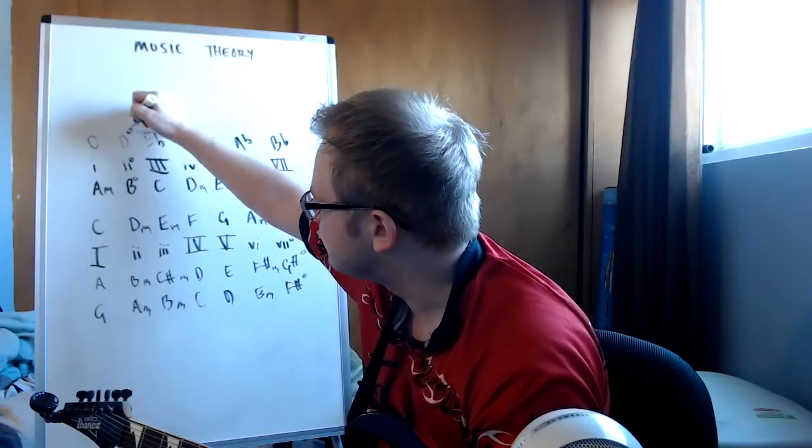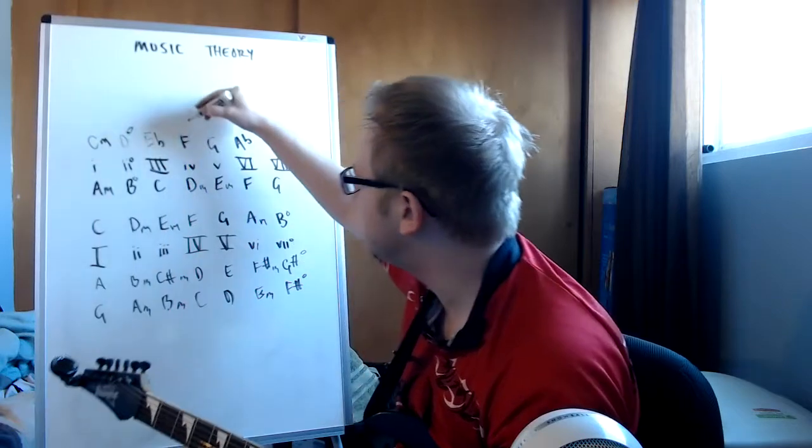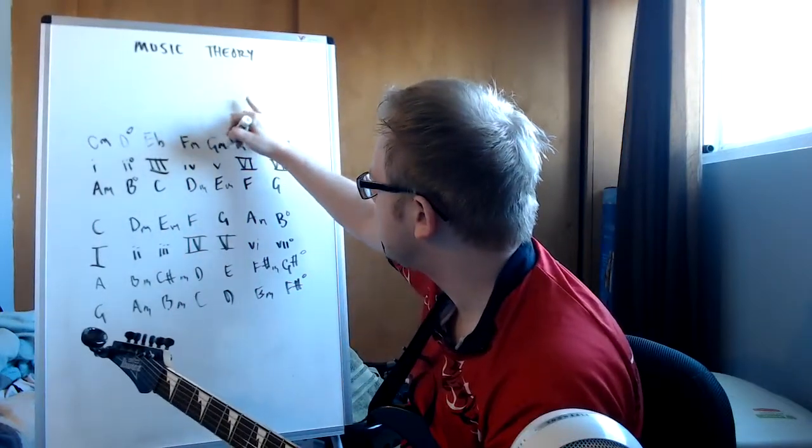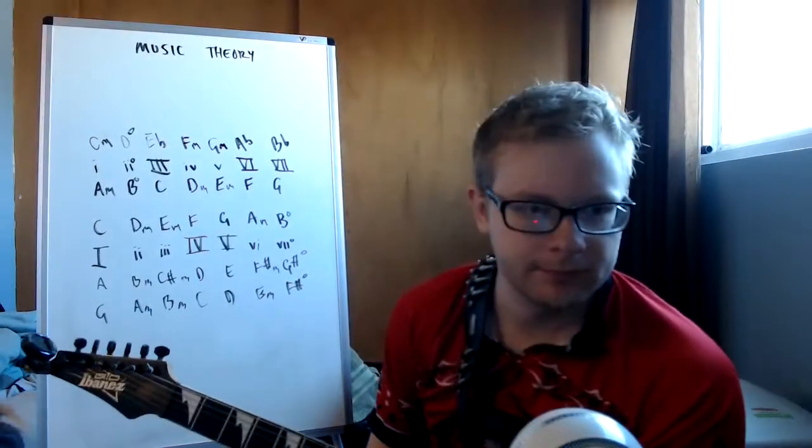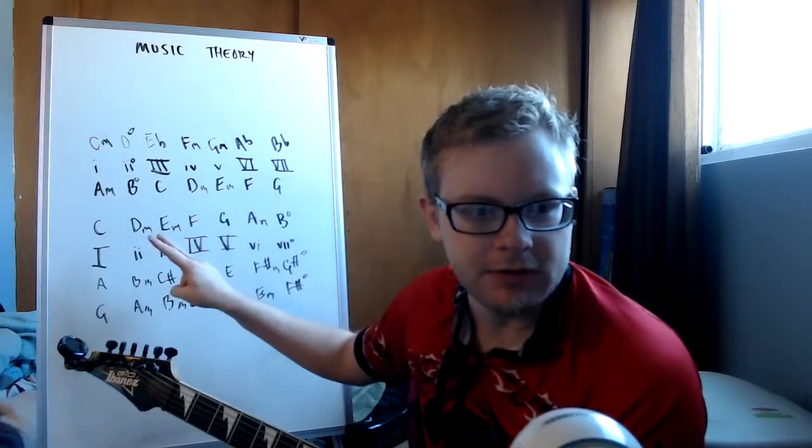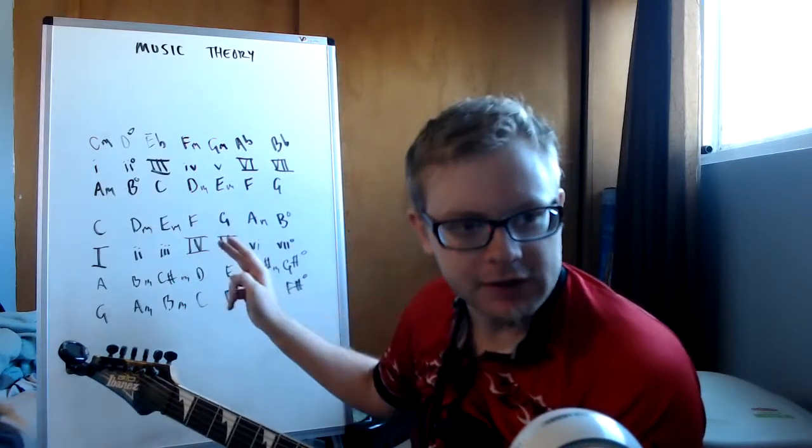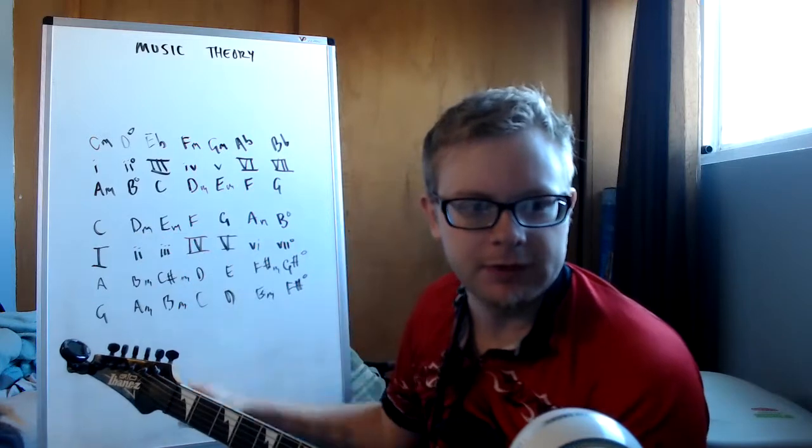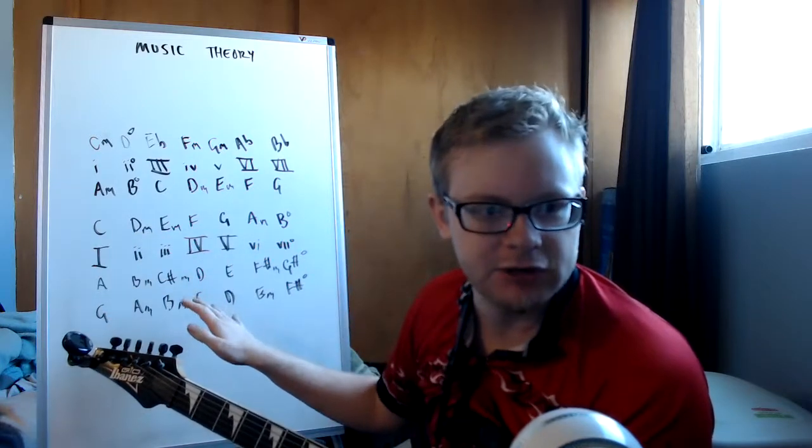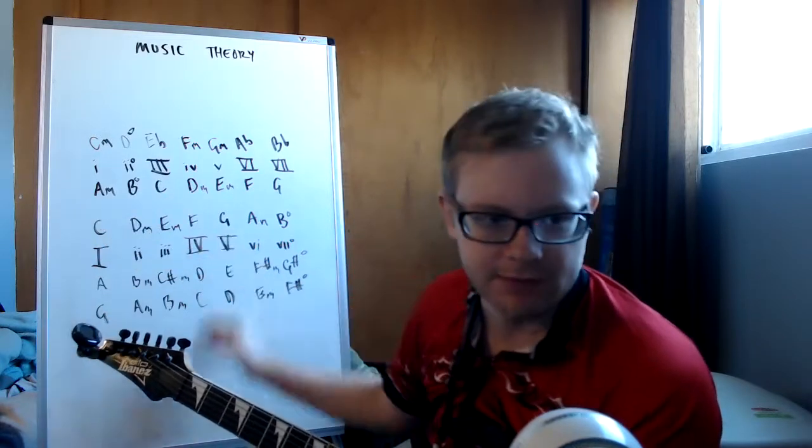So we have to put the diminished here, the minor here at the beginning, the minor on the iv and the v, and then the rest is major. Okay. So you can see how there's three minor chords, 1, 2, 3, and then three major chords, 1, 2, 3. In major, the I, IV, V is major. In minor, the i, iv, v is minor.